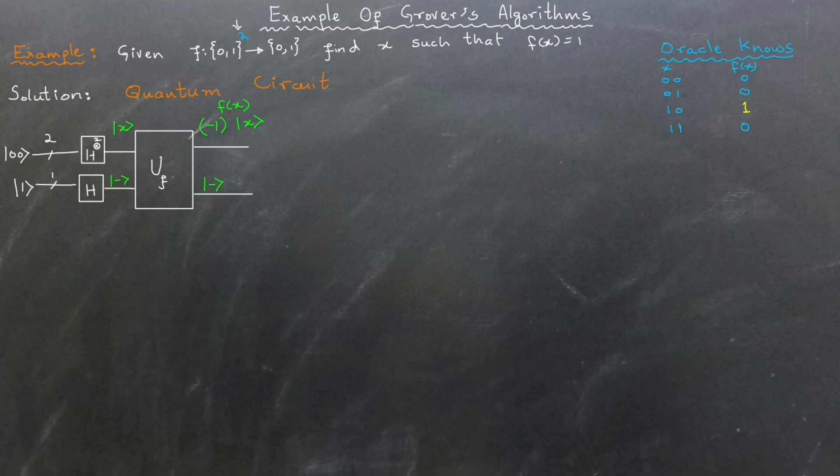The next step is what is often referred to as the diffusion operation. This operation involves three sub-steps. First, we apply Hadamard gate to the first register. Then, we use an operator called U0. Finally, we apply Hadamard gate to the first register once again.